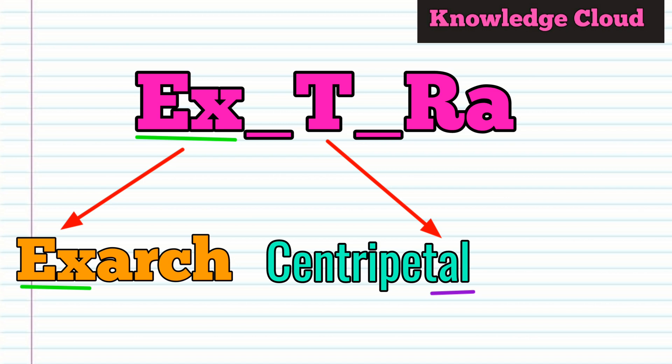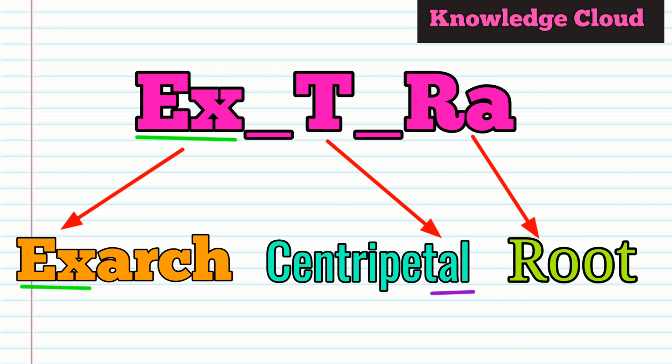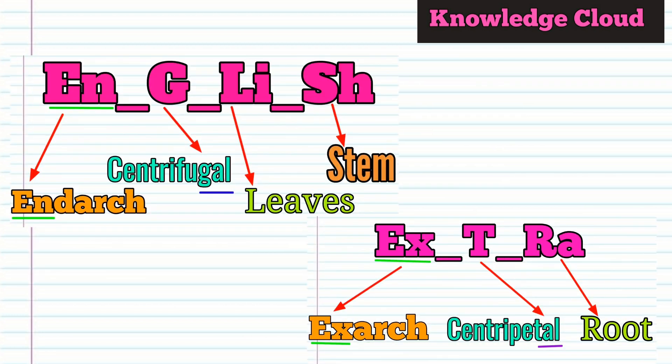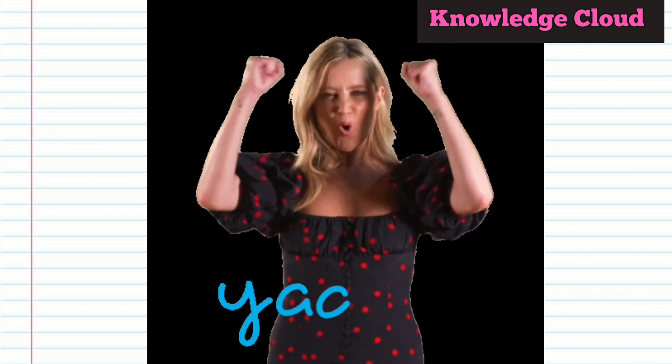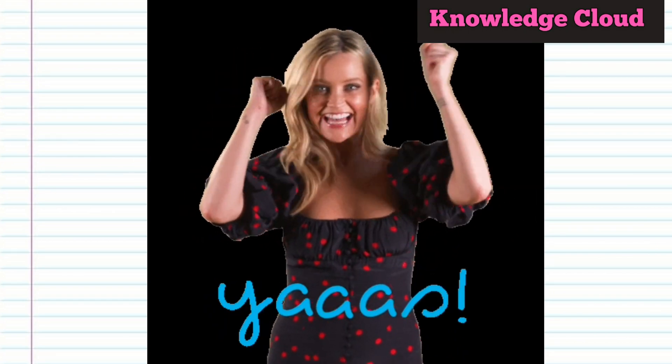Continuing with EXTRA — you relate the remaining letters RA to root. The exarch condition is found in the root. So two simple words — ENGLISH and EXTRA — help you remember all the conditions and examples. I can guarantee you that you will never be confused about the exarch or endarch conditions again.